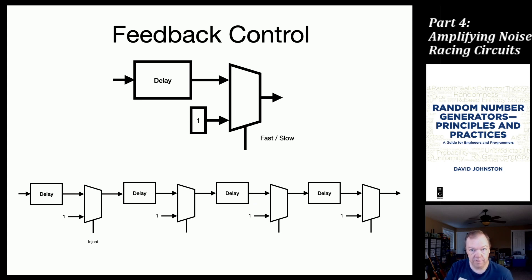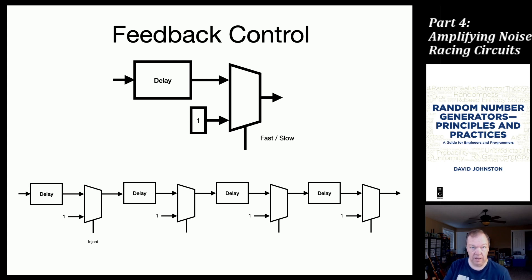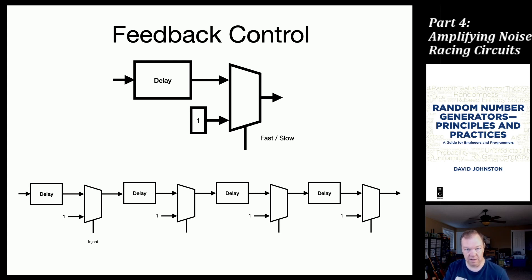That's two new types of entropy sources covered. Next we'll move on to entropy extraction — the next element in a normal random number generator chain. I've decided to cover entropy extractors before online health tests, as they're quite interesting and a change from this entropy source topic. Thank you, goodbye, and see you in the next video.